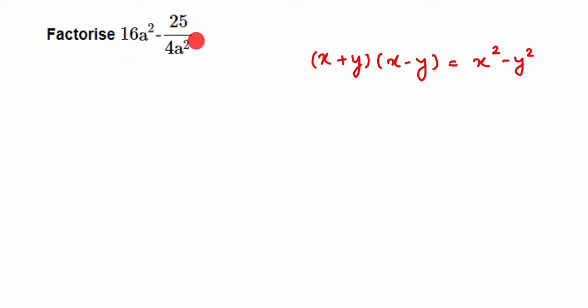If we know x and y, we can substitute into the identity to get the solution. What is x and what is y? Let's start comparing. In place of x² we have 16a².